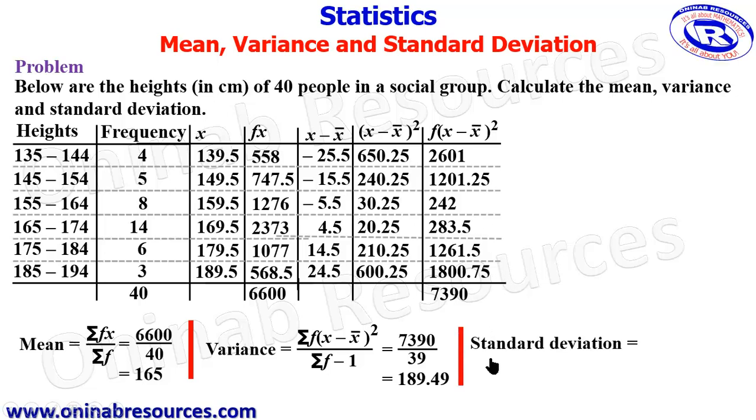We then go for the standard deviation. Standard deviation is square root of variance. So in order to obtain the standard deviation for this distribution, we are going to find the square root of 189.49, and square root of 189.49 gives 13.77 to 2 decimal places.